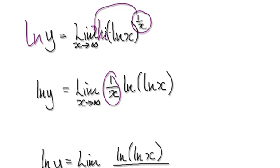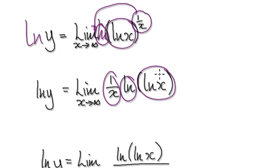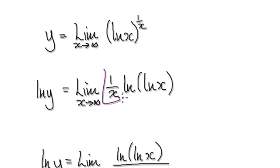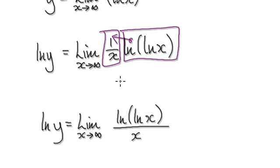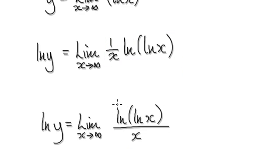This gives you your natural log of natural log. Now visualize it as one block multiplying another block. This block gets multiplied to the top, giving you one thing over the other thing — effectively a fraction.